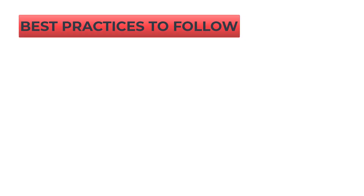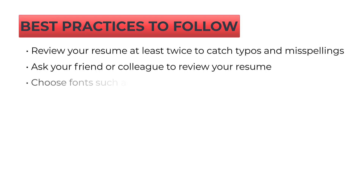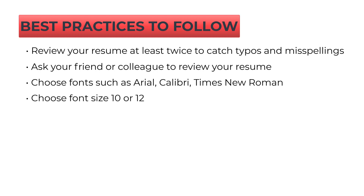Here are the best practices to follow. Review your resume at least twice to catch typos and misspellings — you can use online grammar and spell-check tools for this, and they also make suggestions to improve your writing. You can also ask a friend or colleague to review your resume. Choose easy-to-read fonts such as Arial, Calibri, or Times New Roman, and stick to that format throughout. Choose font size 10 or 12 but don't go below 9. Change sizes in descending order from your name, header, and bullet points. Make all headings bold. Use keywords that employers are using in their job descriptions.